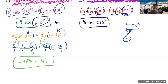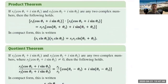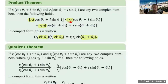So just to recap: there is both the product and the quotient theorem. For the product, when we have two R values we multiply them, and for the cis of our angles, when multiplying we add the angles. It's much easier to write cis than the whole cosine plus i sine. So the product rule: multiply R's, add angles.